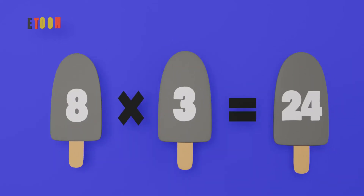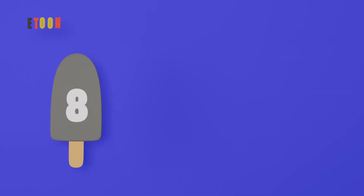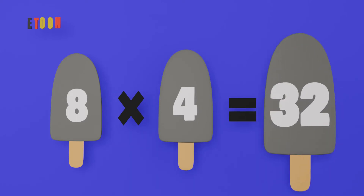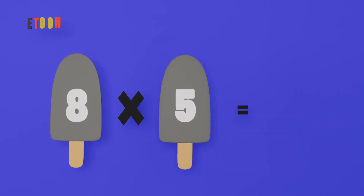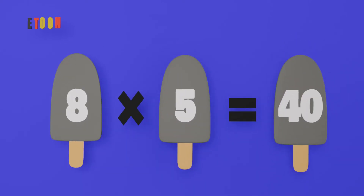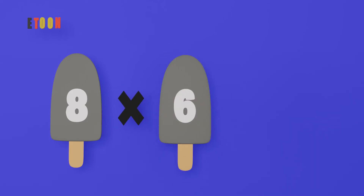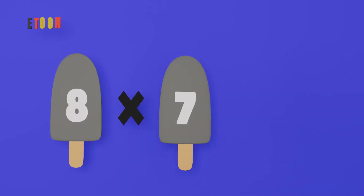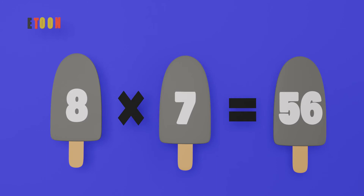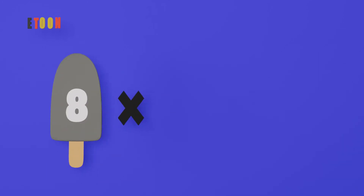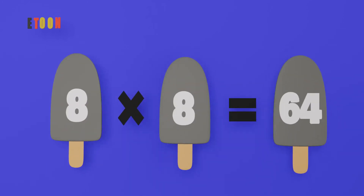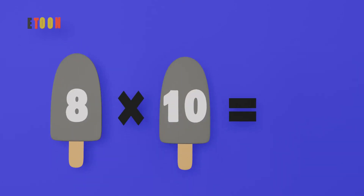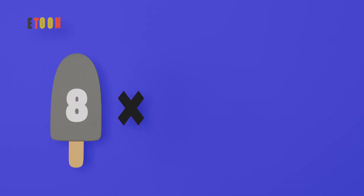8 times 3 is 24, 8 times 4 is 32, 8 times 5 is 40, 8 times 6 is 48, 8 times 7 is 56, 8 times 8 is 64, 8 times 9 is 72, 8 times 10 is 80.